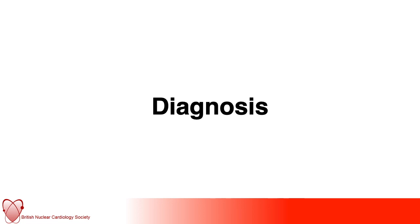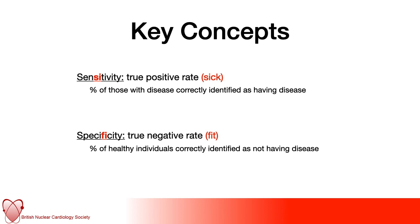Talking about diagnosis now — how good are we at estimating the likelihood of coronary disease using myocardial perfusion scintigraphy? A key concept to grasp is sensitivity and specificity. Sensitivity — with 'SI' in the middle — is how good we are at detecting the proportion of patients who are truly sick: i.e. the true positive rate. Specificity — with 'FI' — is how good we are at identifying the truly well patients: i.e. the true negative rate. This is the key concept for the next slides.